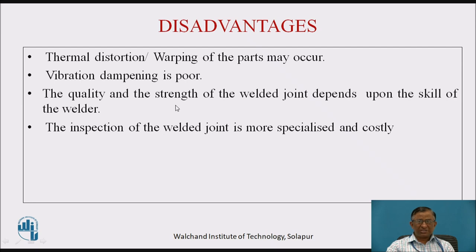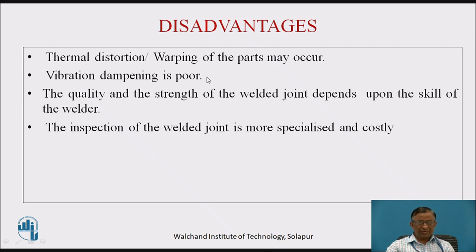However, there are certain disadvantages of welded joints. The important disadvantage is thermal distortion or warping of the parts. In welding, localized heating occurs, and because of that, unequal cooling of the parts in the vicinity may occur, leading to distortion or warping. Vibration dampening is also poor — resistance to vibration and absorption capacity is very less in welded joints, so they cannot be used in structural applications where vibrations are present or expected.